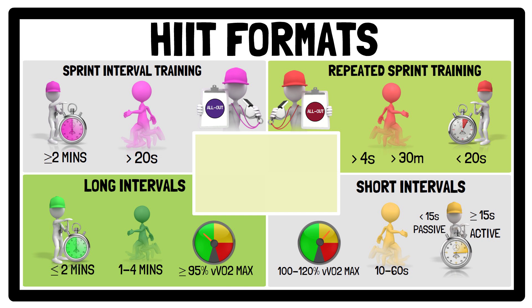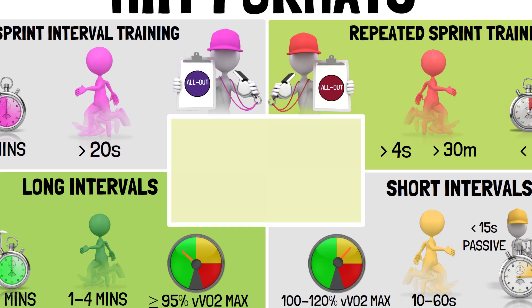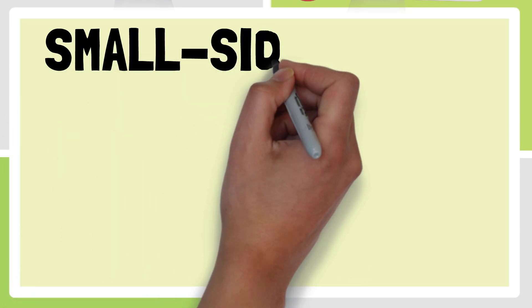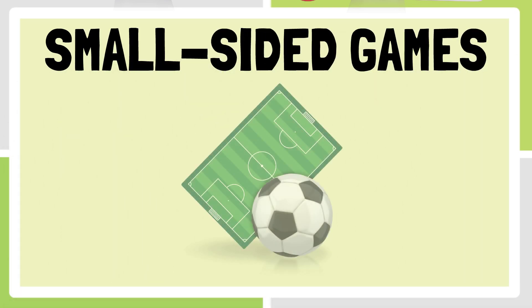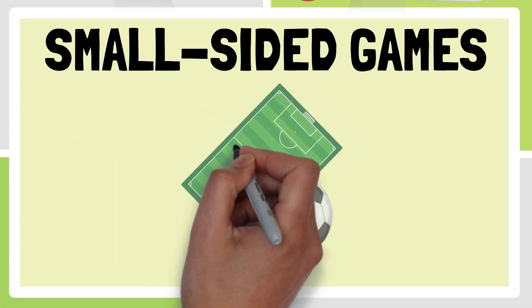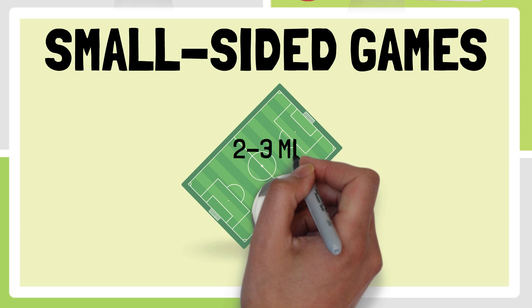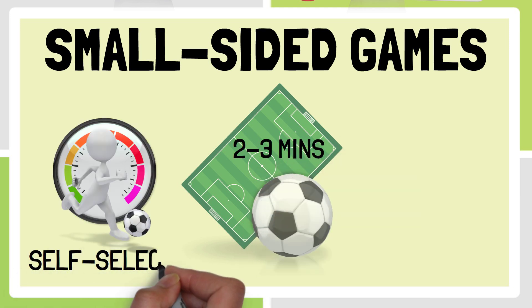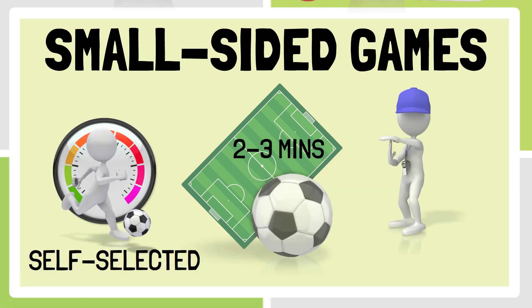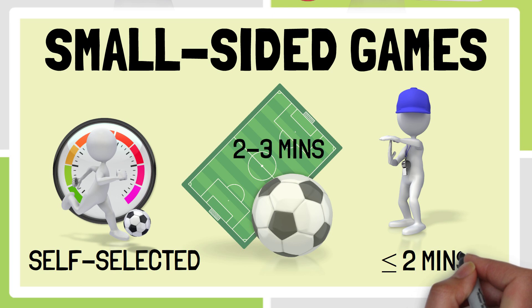Game-based training — or in the case of soccer, small-sided games — involves small formats of play for 2-3 minutes at self-selected intensities, using rest periods of 2 minutes or less between play.